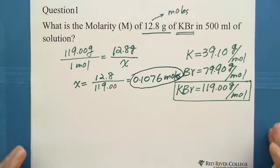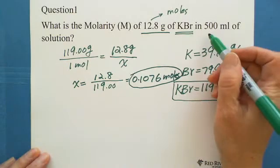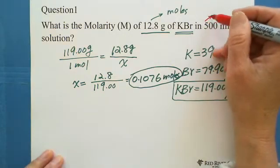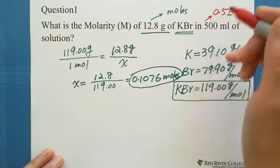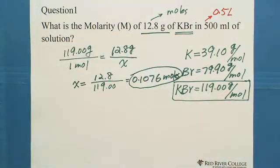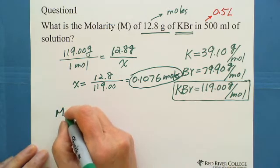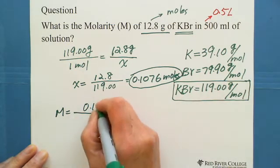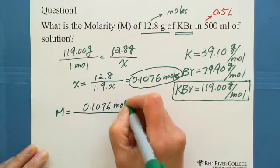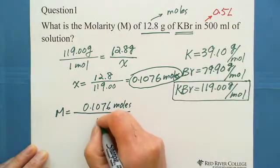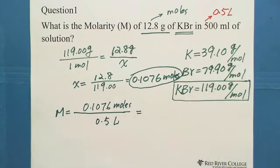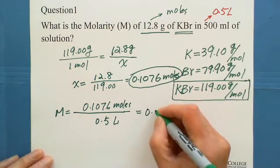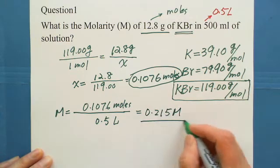After we find mole, because we already have the liter of solution is 500 milliliter, we can convert 500 milliliter into liter is 0.5 liter. Then we can use these two numbers to find the molarity. Molarity equals to number of moles is 0.1076 mole divided by liter solution is 0.5 liter. Just divided by 0.5, actually multiplied by 2. You got 0.215 molarity. This is the answer.